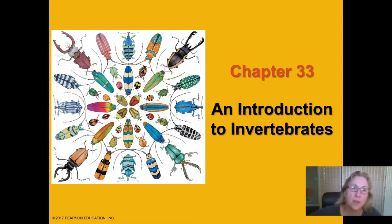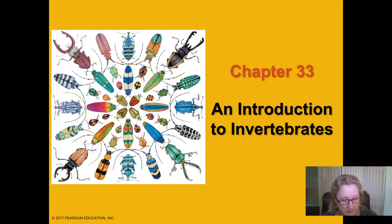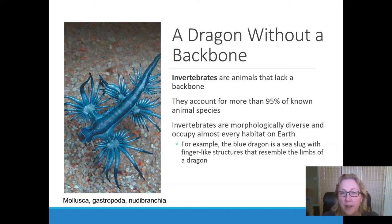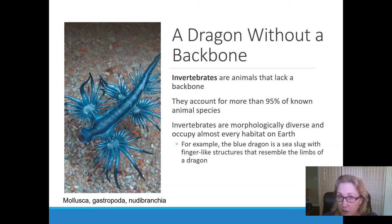In this chapter, we're going to go through all of the animals except the chordates. We call these animals invertebrates because they don't have a backbone. It seems like a silly name for them because we're only focused on the vertebrates since we're a vertebrate. But the invertebrates are more than 95% of the known species of animals, and many of them are unknown. There are probably hardly any unnamed vertebrates, but there are thousands and possibly millions of species of unnamed invertebrates.